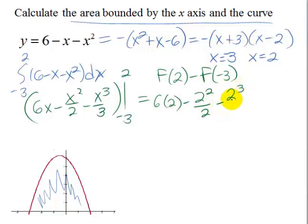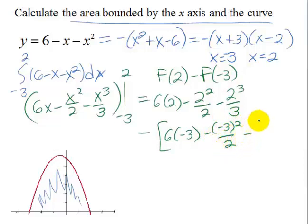And then minus, we're going to subtract 6 times negative 3 minus negative 3 squared over 2 minus negative 3 cubed over 3.